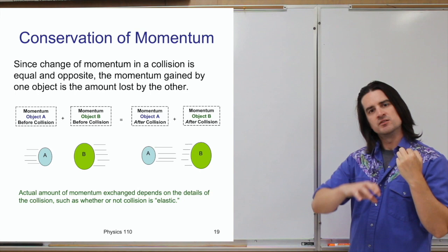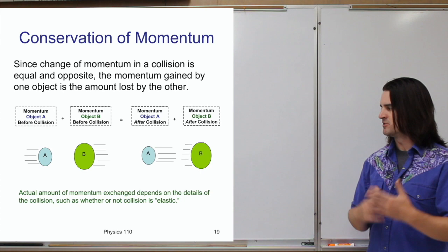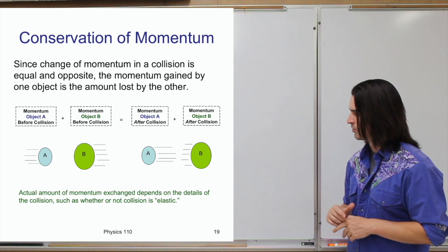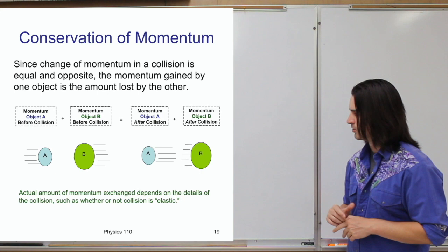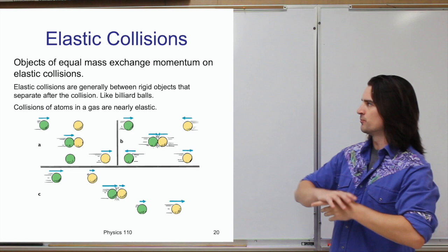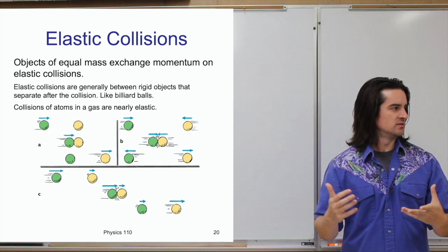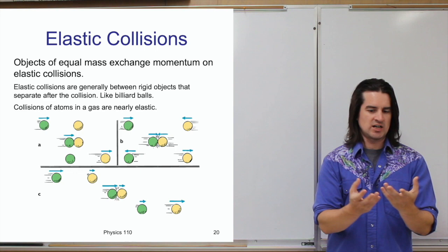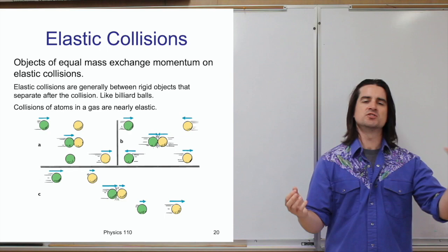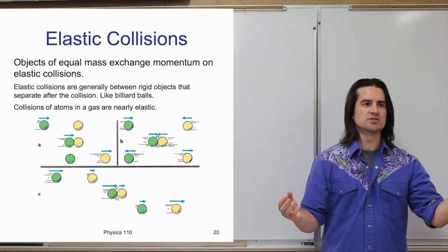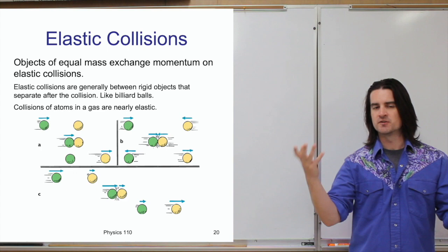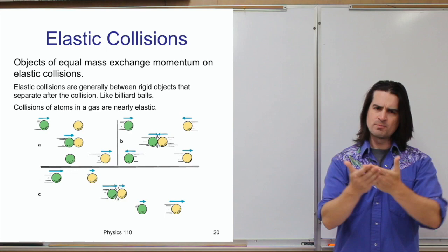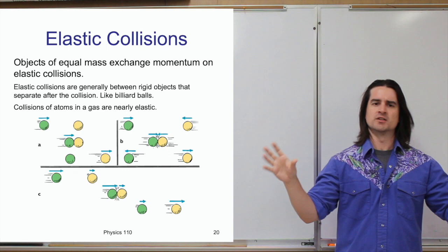The exact way momentum changes in a collision depends on details and on whether the collision is elastic or inelastic. These terms represent opposite ends of a spectrum. On one end we have elastic — sometimes called perfectly elastic — collisions. On the other end we have inelastic — or perfectly inelastic — collisions. For our purposes, we'll just consider these two extreme cases.